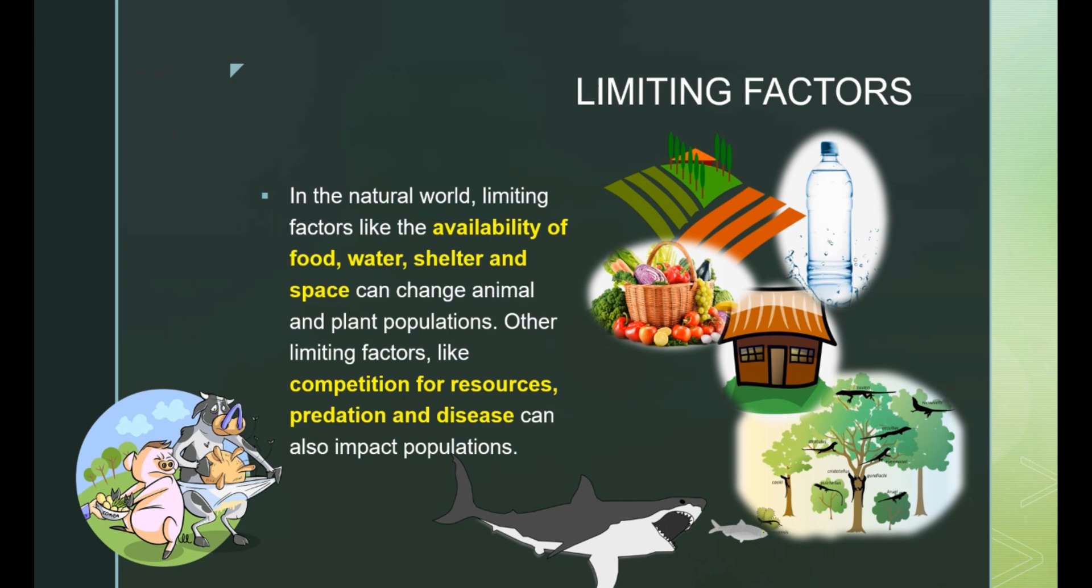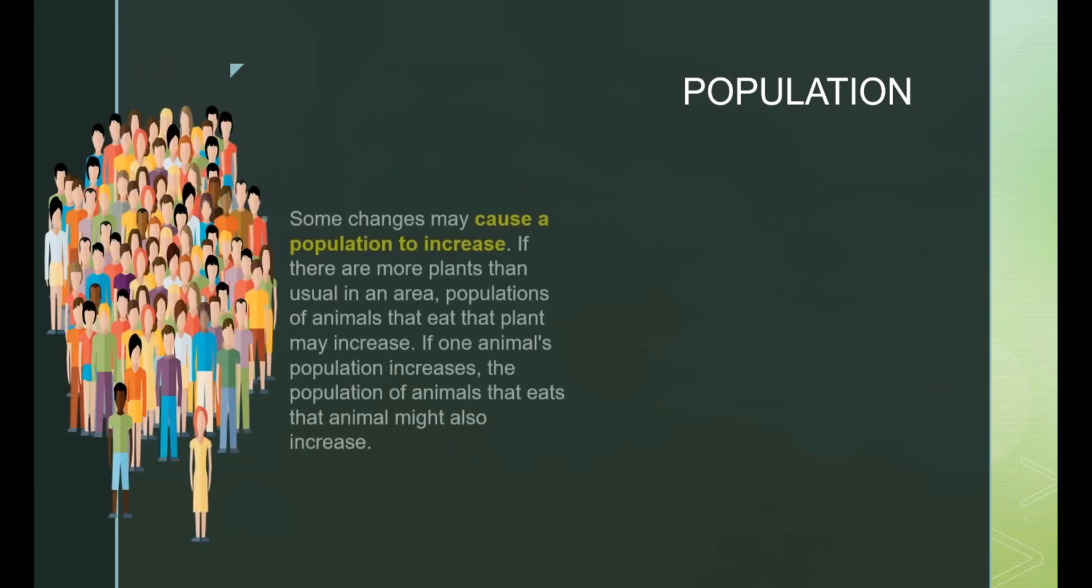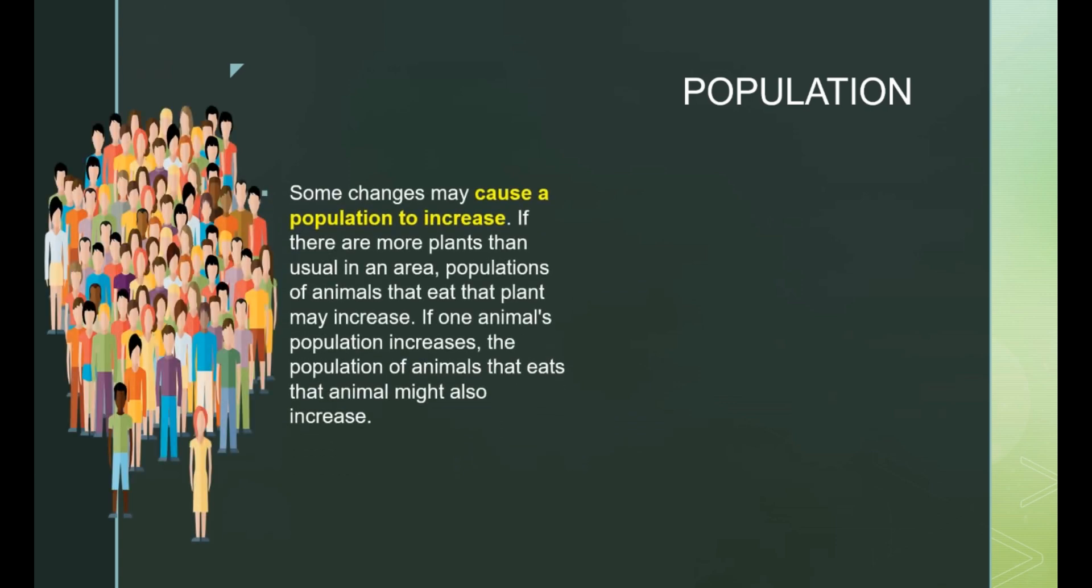If any of the limiting factors change, animal and plant populations change too. Which brings us to population. Some changes may cause a population to increase. If there are more plants than usual in an area, populations of animals that eat that plant may increase. If one animal's population increases, the population of animals that eat that animal might also increase.